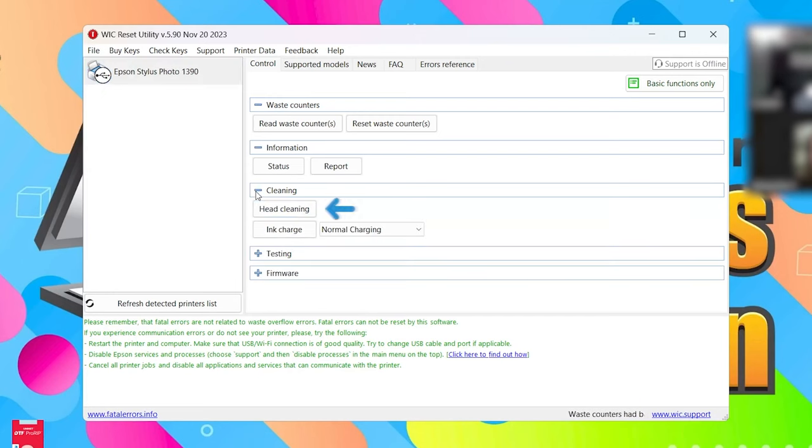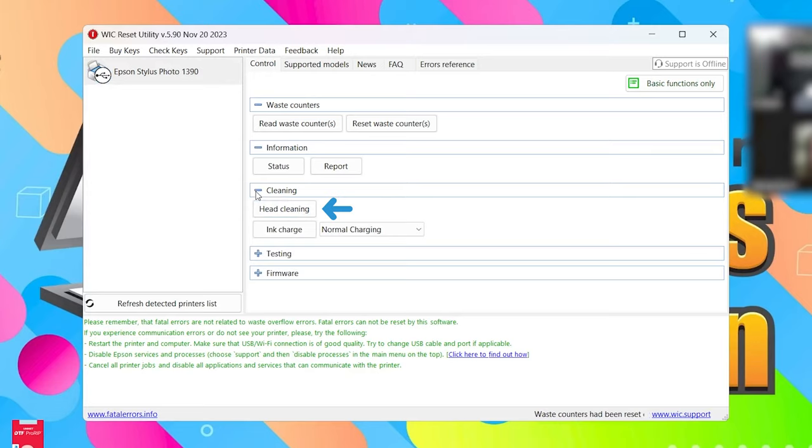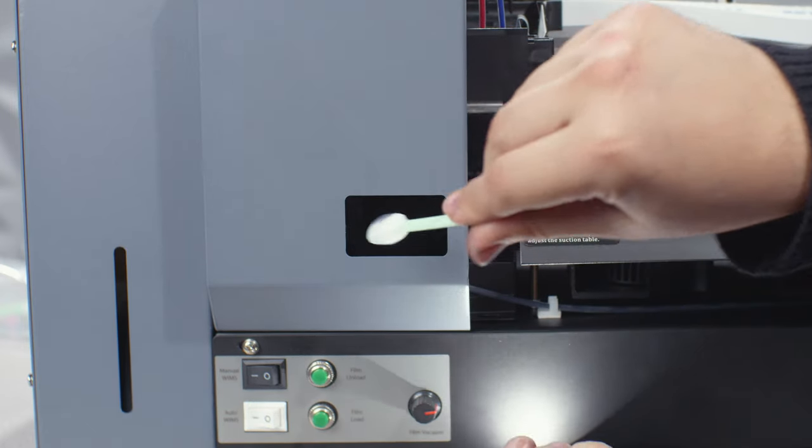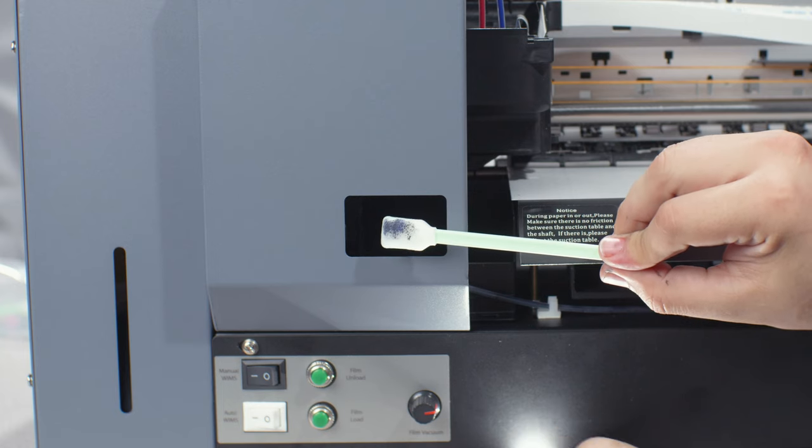A head cleaning and nozzle check are the core elements of your daily maintenance and usually only take a few minutes. It is important to perform these steps whether you plan to print that day or not. First, perform your regular head cleaning. Then, you'll want to verify success with a nozzle check. If the nozzle check comes back with a broken pattern, you'll want to repeat the process until the pattern shows clear or that all the nozzles are firing properly.